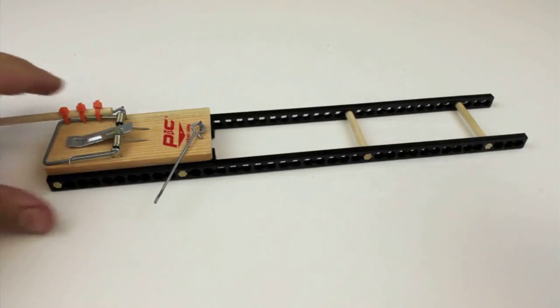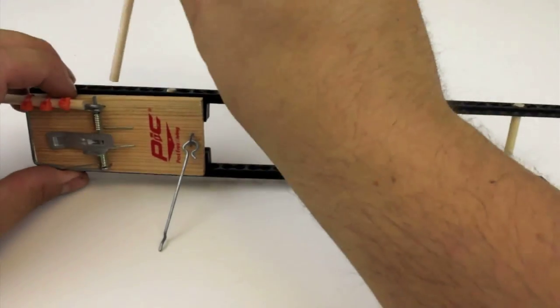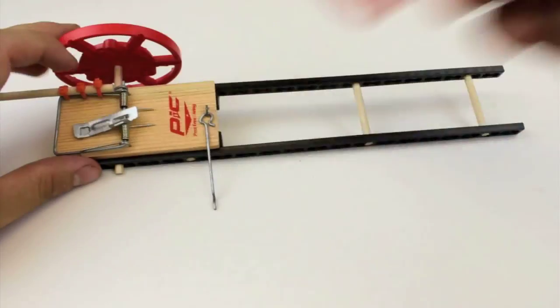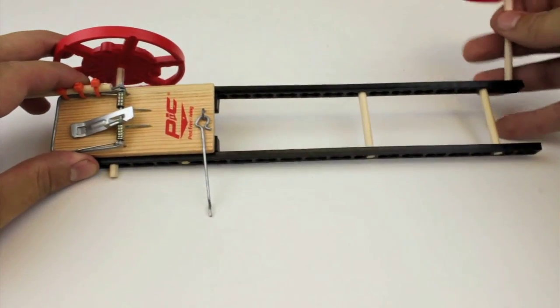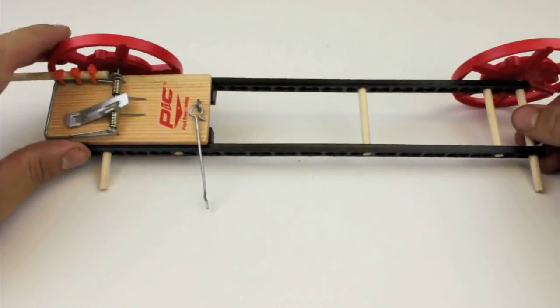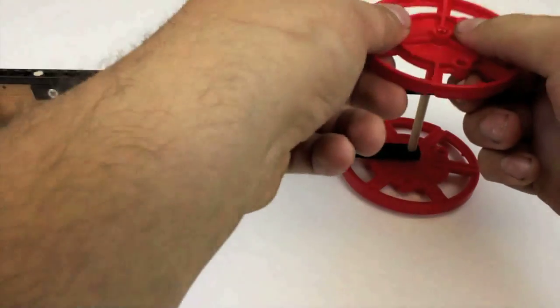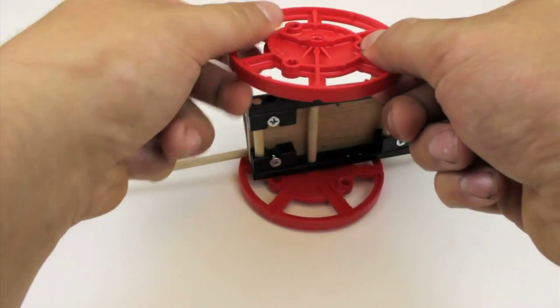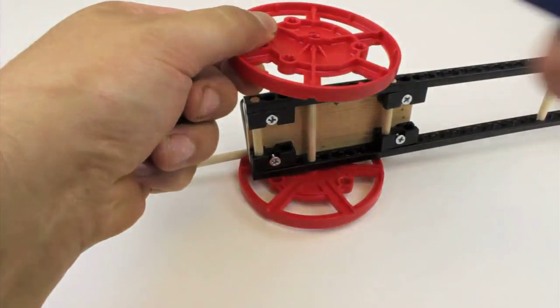Take the dowels with the wheels on them and place them through the holes in your frame that you reamed out. Now place another wheel on the other end of the dowel. If it is a little tough to push on you can tap it with a pair of easy cutters.